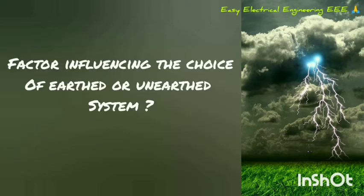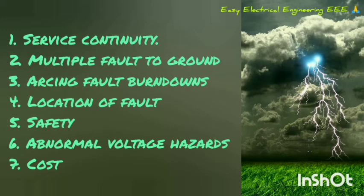What are the factors influencing the choice of earth or earth system? 1. Service Continuity, 2. Multiple Fault to Ground, 3. Arcing Fault Burndowns, 4. Location of Fault, 5. Safety, 6. Abnormal Voltage Hazards, 7. Cost.